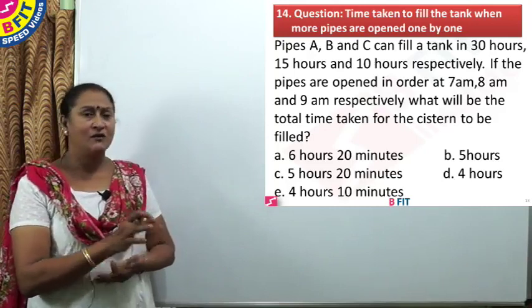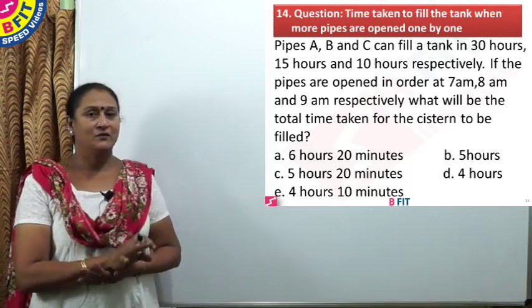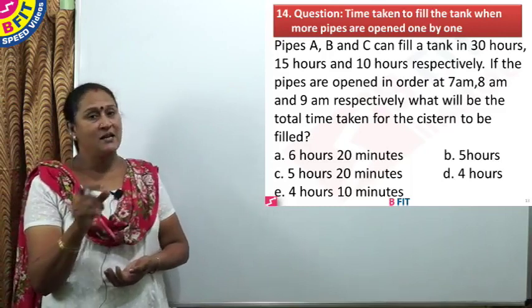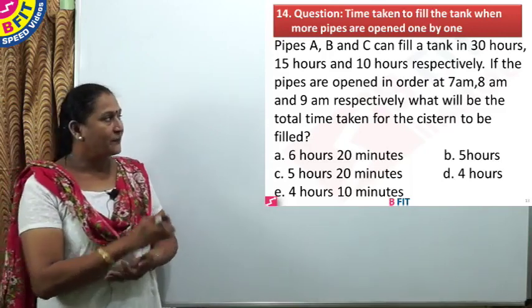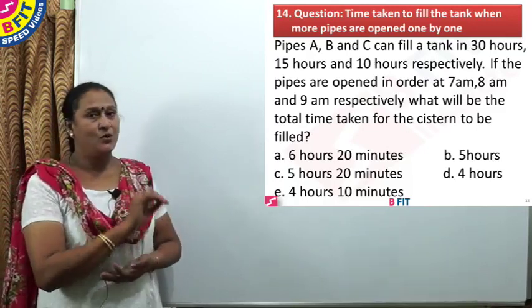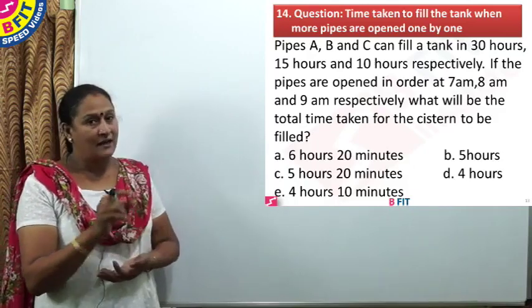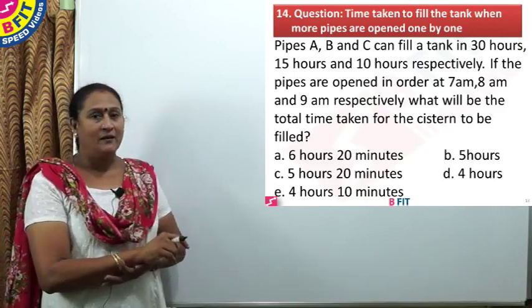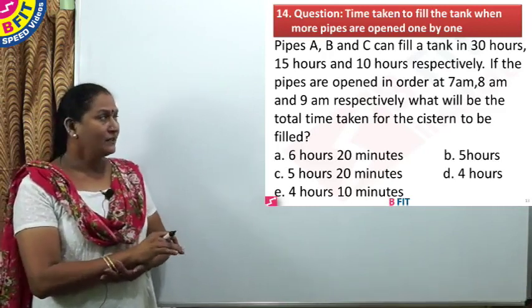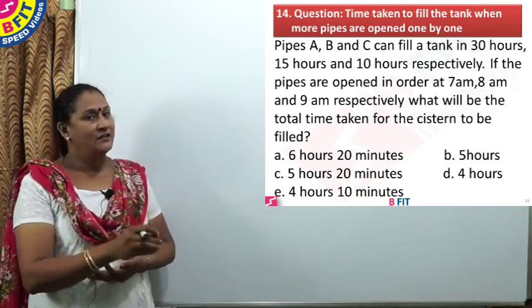Earlier questions we saw both taps are opened and A was closed after 4 minutes or after 24 minutes B was closed. Here, after how many minutes A, B and C are opened is not given. But instead, timings are given. At 7am A is opened, at 8am B is opened. At this time A is also filling the tank together with B, and at 9am C is opened. From 9 o'clock, all the 3 taps are opened till the tank is filled. All the taps are opened in one hour interval of time.